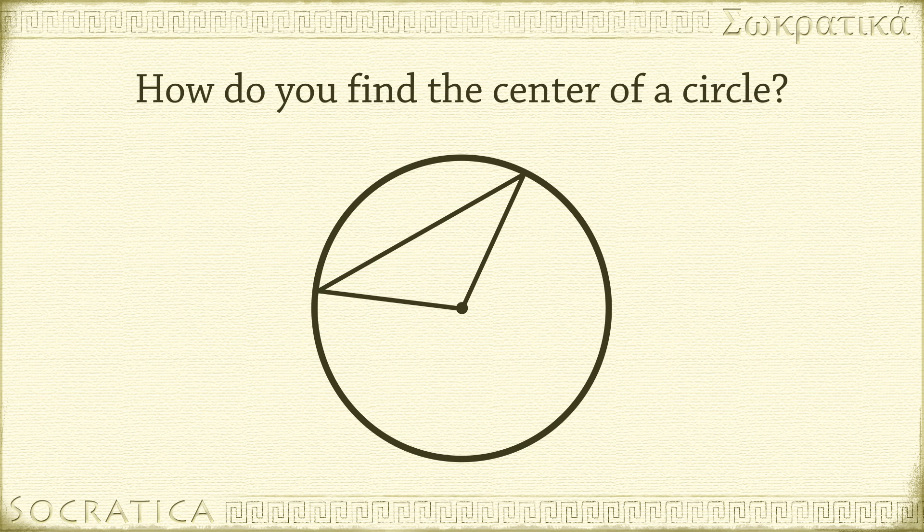Now, look what happens if we draw an altitude for this triangle through the center of the circle. The altitude cuts the isosceles triangle into two right triangles. Both of these right triangles have the same hypotenuse r, and these legs are identical. So, by the Pythagorean theorem, the other legs are equal to each other. This means the altitude is a perpendicular bisector of the chord.